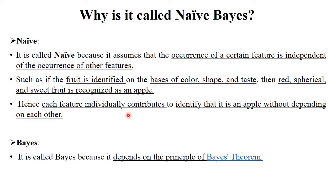The next important point: why is it called Naive Bayes? 'Naive' refers to the assumption that the occurrence of certain features is independent of the occurrence of other features. For example, suppose features of a dataset include: color is red, shape is spherical, and taste is sweet. As per these features, you identify the fruit as an apple. So 'Naive' means multiple independent features are used to recognize a particular object. 'Bayes' means this algorithm is completely dependent on the principles of Bayes theorem, which we already discussed in a previous session.